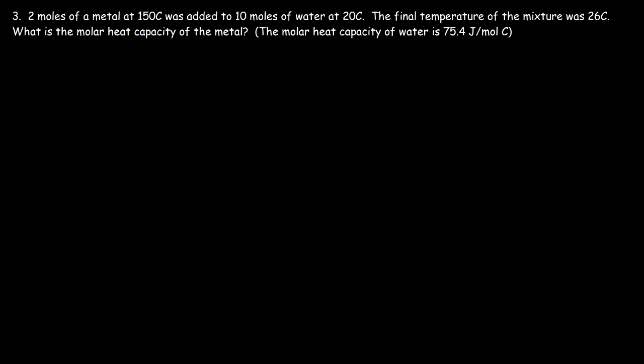Number three. Two moles of a metal at 150 degrees Celsius was added to 10 moles of water at 20 degrees Celsius. The final temperature of the mixture was 26 degrees Celsius. What is the molar heat capacity of the metal? So in this problem, we have a heat transfer situation.